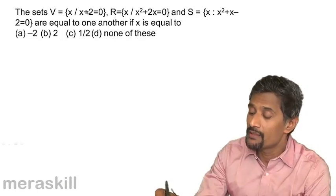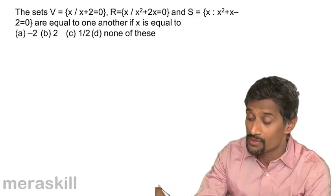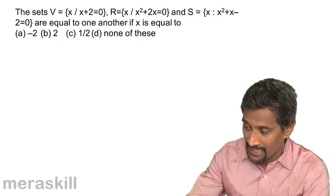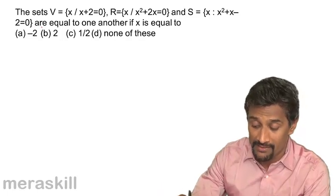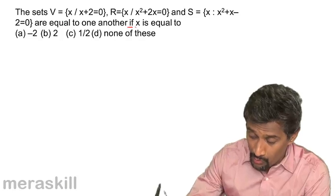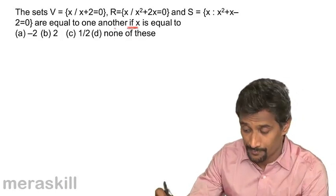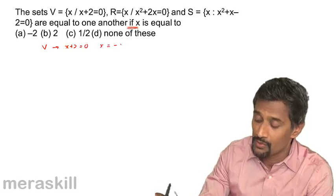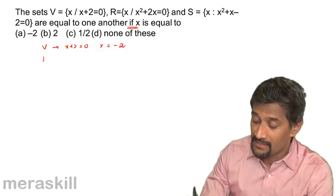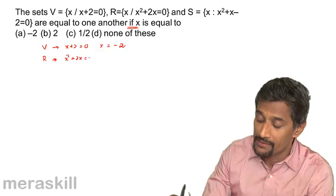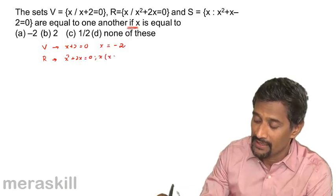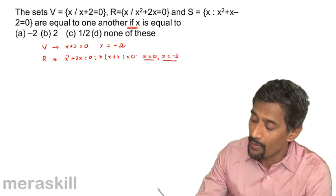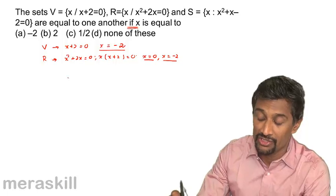Consider sets defined by equations: V = {x : x + 2 = 0}, R = {x : x² + 2x = 0}, and S = {x : x² + x − 2 = 0}. For V, x + 2 = 0 gives x = −2. For R, x² + 2x = 0 factors as x(x + 2) = 0, giving x = 0 or x = −2. So R has two values satisfying the condition.